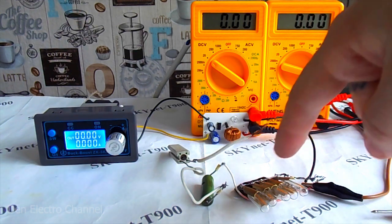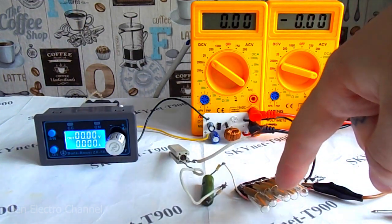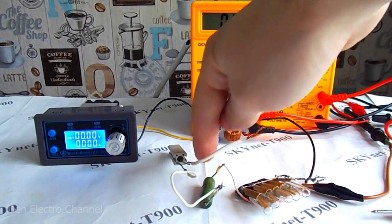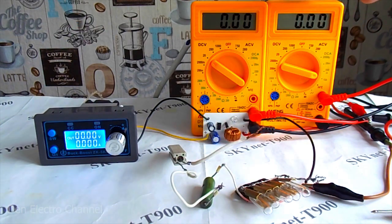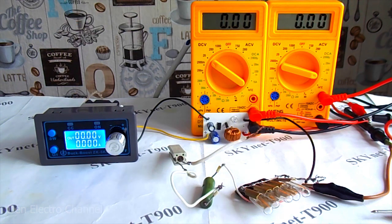As a load, I will use several light bulbs and two resistors connected in series. The right tester will show the current at the output of the converter, and the left one will show the voltage.